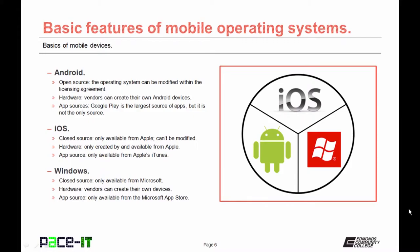Now let's move on to a brief discussion of Windows. Windows does have a mobile operating system. It's closed source as well — it's only available from Microsoft. But your hardware options are more than what's available with iOS, as vendors can create their own devices. The only readily available source of apps is from Microsoft, though. So it's kind of a combination of the open source and the closed source ecosystem.